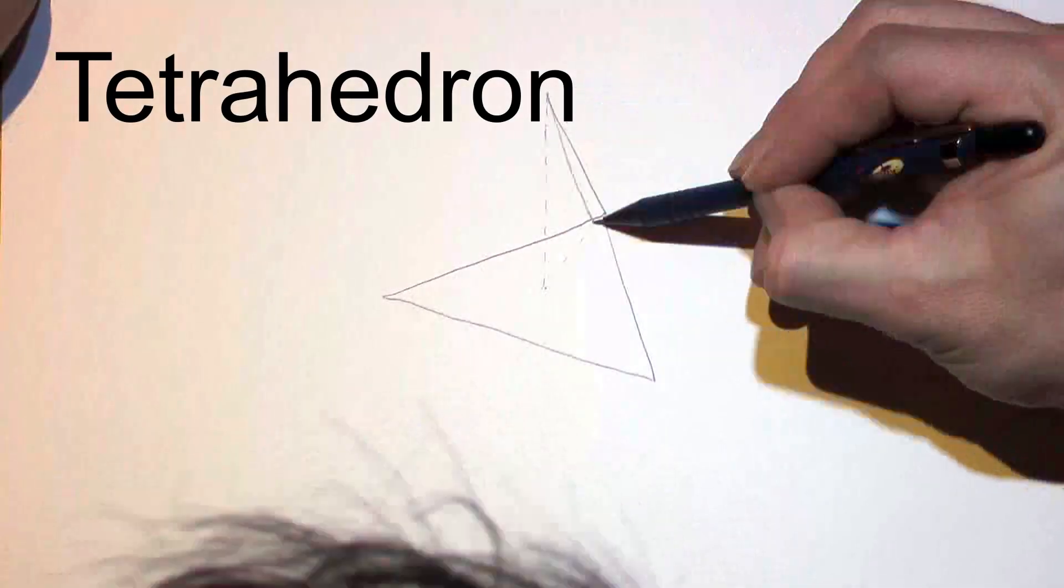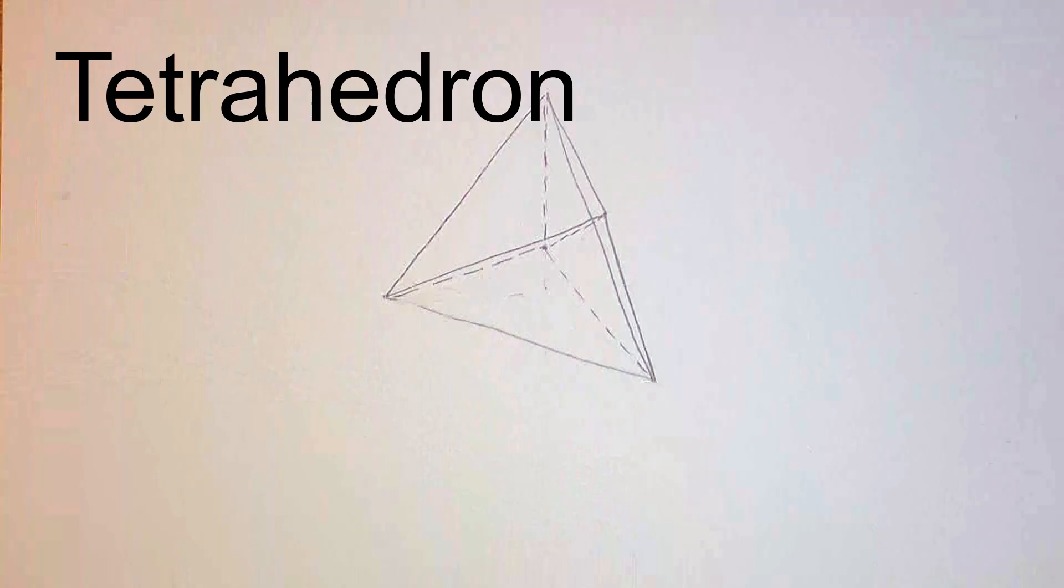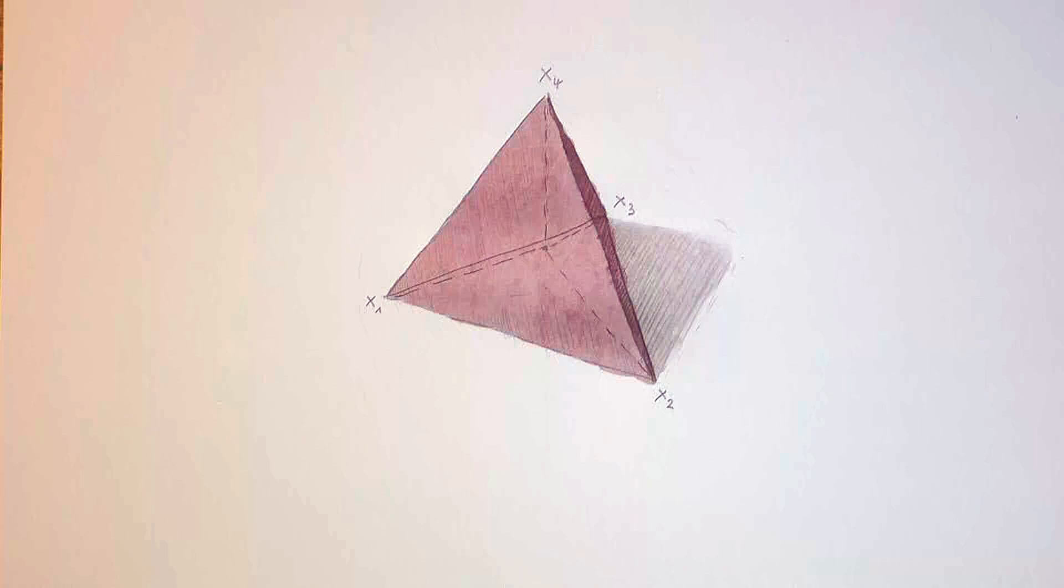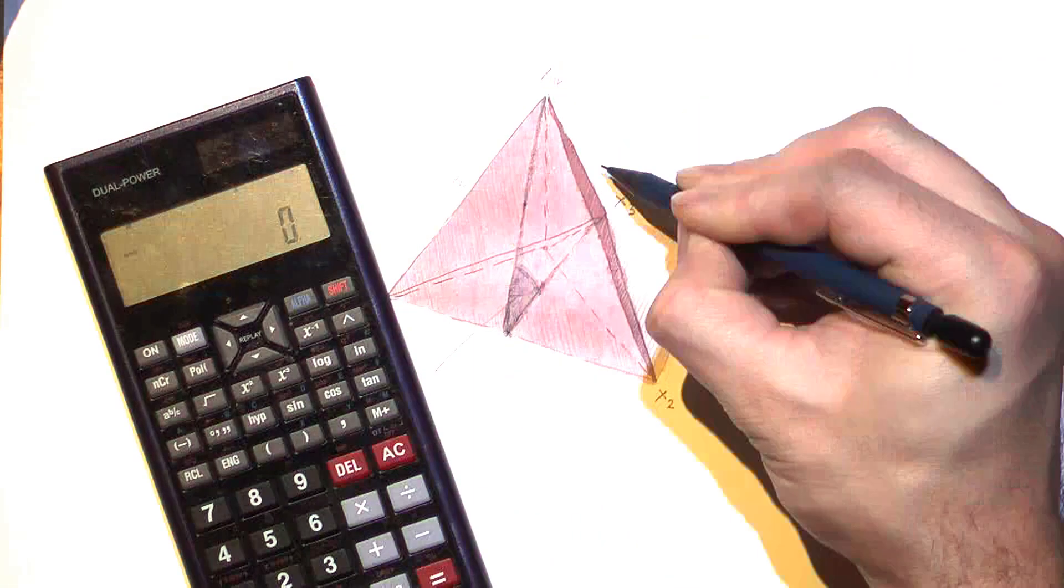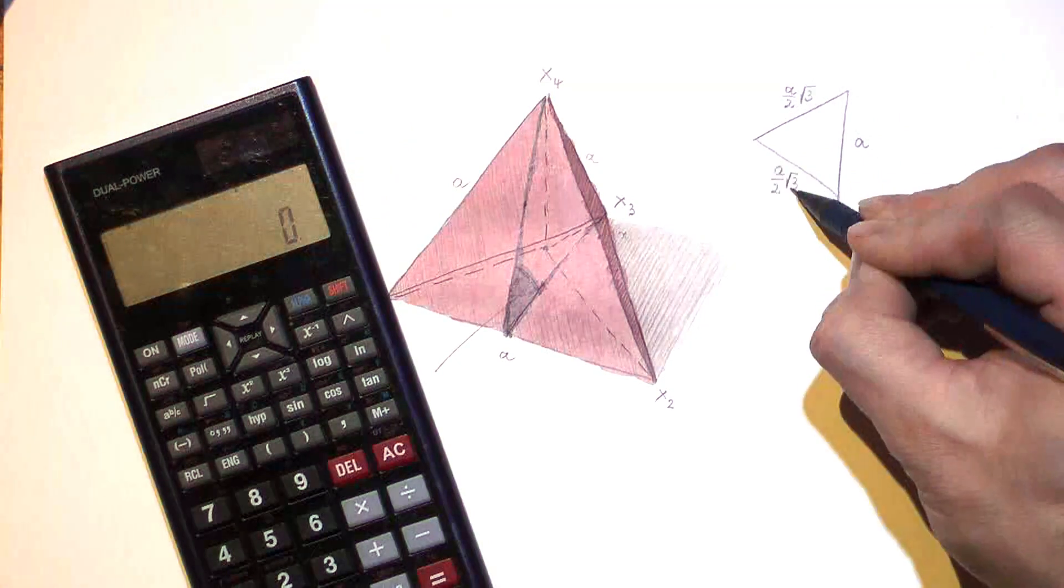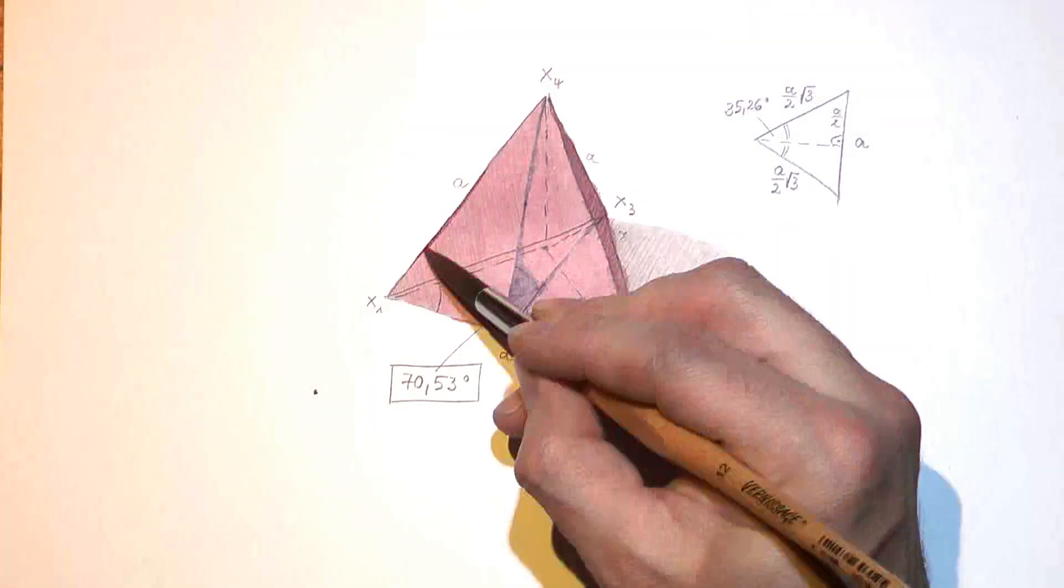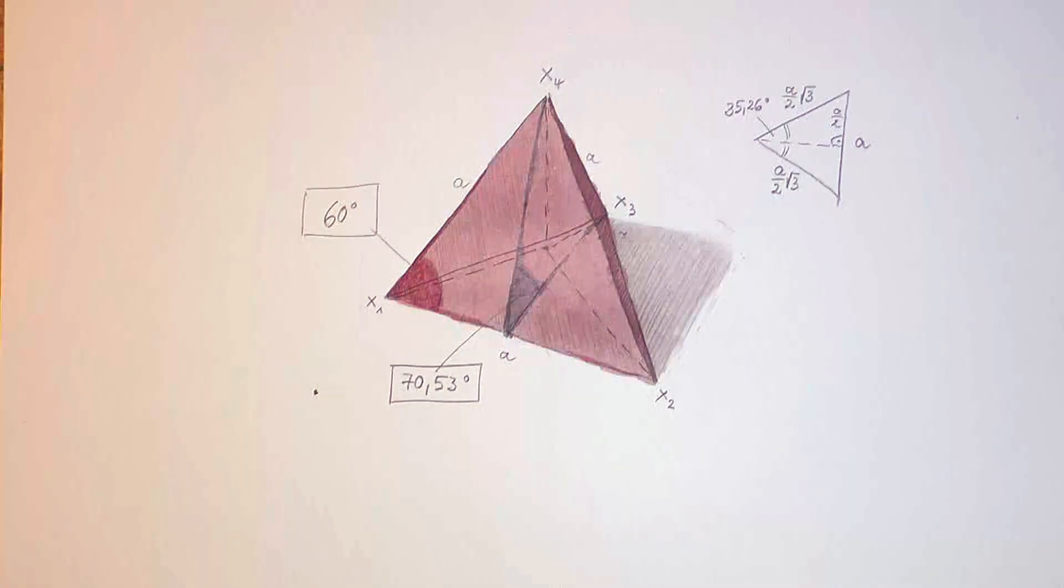We start with the tetrahedron. It has four faces that are equilateral triangles. Because we will work by tilting the saw blade, the correct angles are important. Here we have 70.5 degrees between the faces of the tetrahedron.